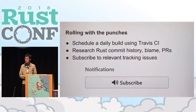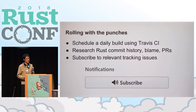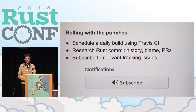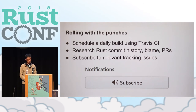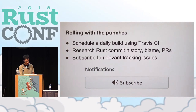Research Rust commit history, blame, and PRs. The nice thing about the Rust development process is that it's really open — if you find something that breaks, it's just a matter of a few minutes of poking around and you'll probably find out what changed, why it changed, and what you can do to fix it. And finally, subscribe to relevant tracking issues. All unstable features including the procedural macro API have a GitHub issue that tracks all of the work done on that feature, so it's generally a good idea to subscribe to that particular tracking issue.